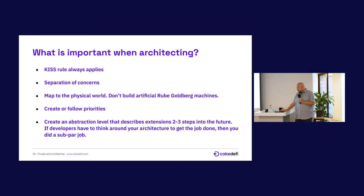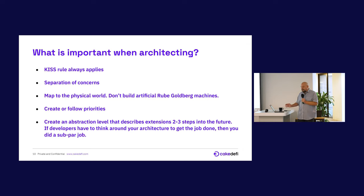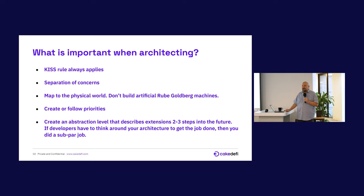Create or follow priorities, and try to describe an abstraction level that takes two or three steps into the future. For example: we don't have time to build observability in this sprint, but we are going to do it in the next one — so there needs to be a way to do that. Where do I plug in my logger? I think observability should be built right from the start. Also, if you have to work around architecture — like authorization having to be done for each endpoint because it wasn't built in from the beginning — that's a problem.